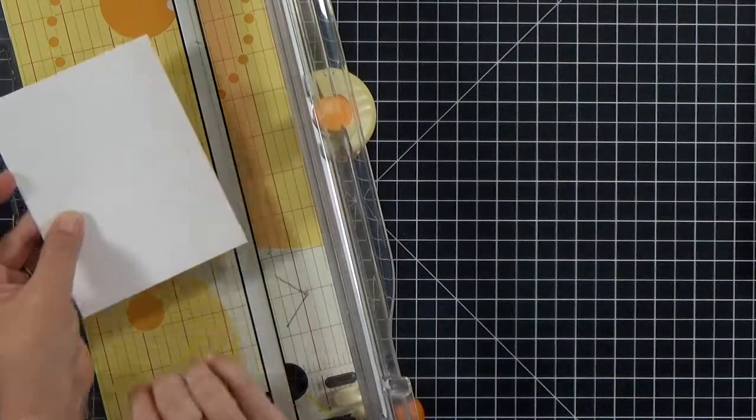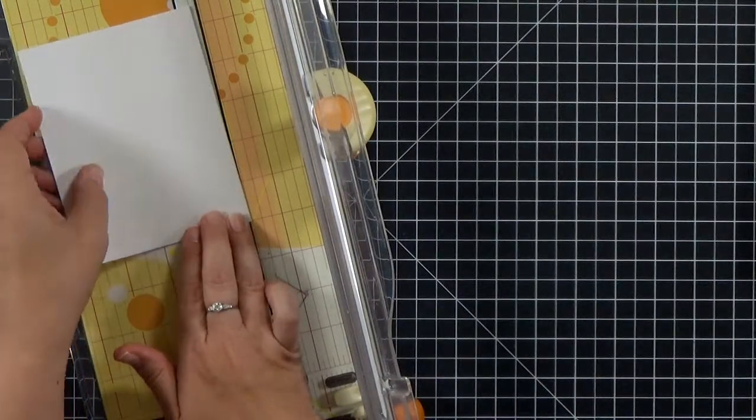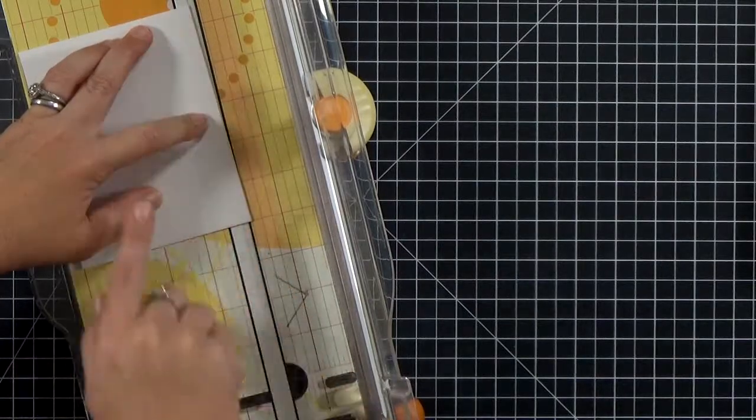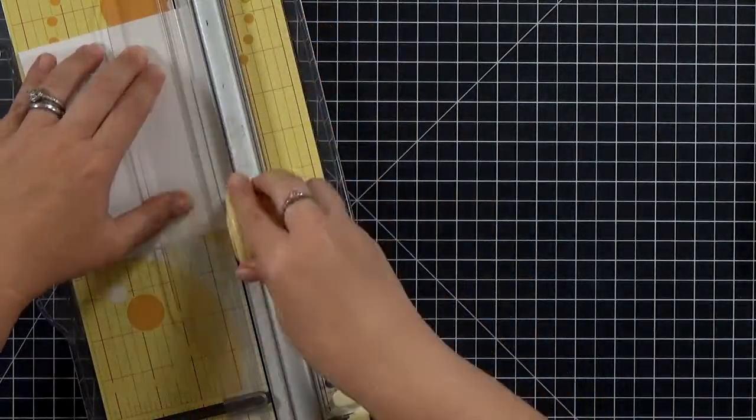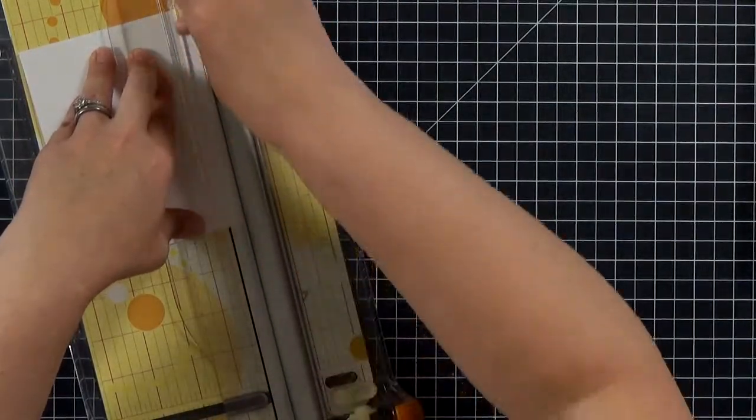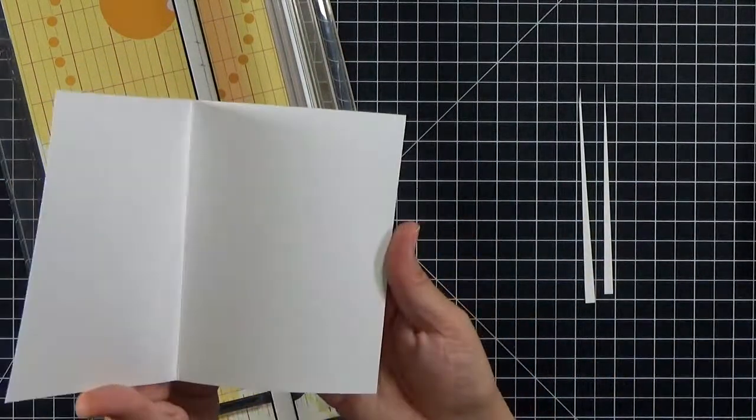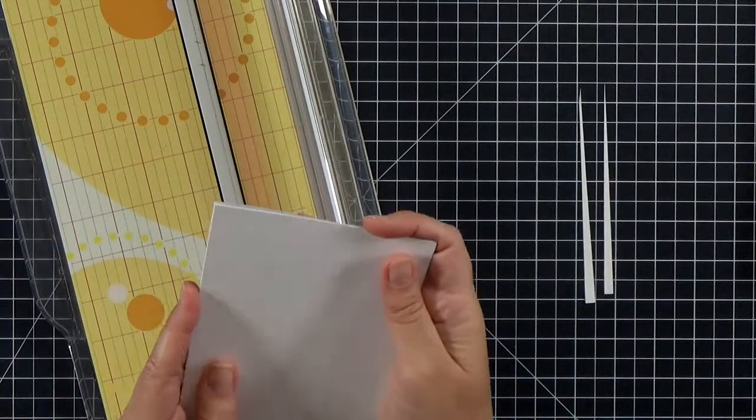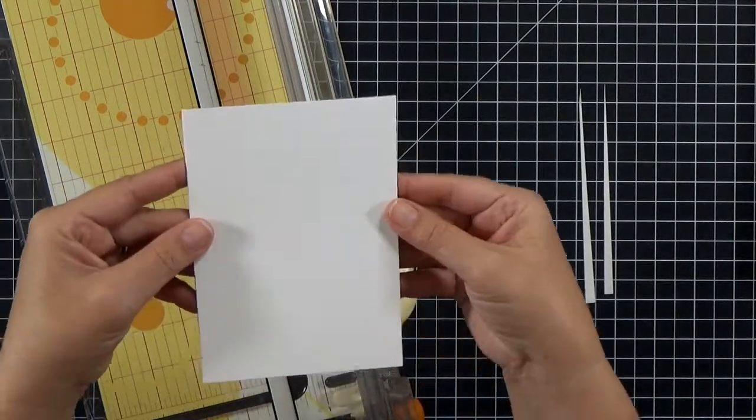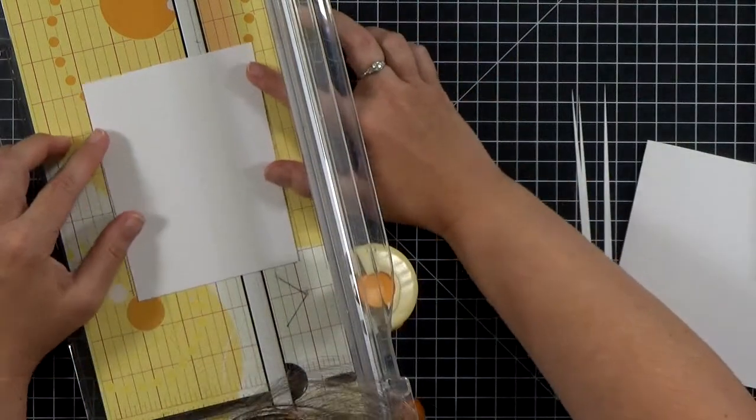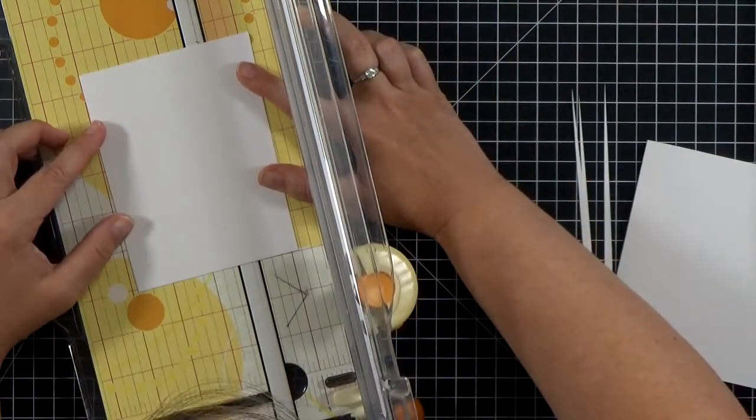I'm going to line this up in my trimmer so that the bottom right corner of both the card front and the card base are lined up so that the bottom right corner is about a quarter of an inch in and the top right corner was right at the cutting line. So just those two points kind of match them up and that shaves off a little triangle. Now because we can't cut the left side of the card because that's where the fold is, we need to cut the bottom.